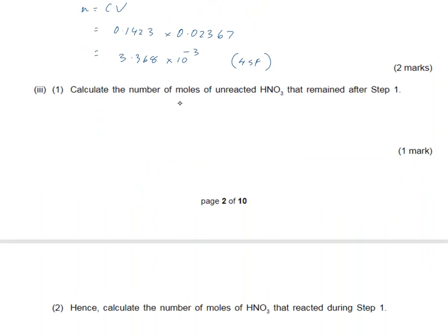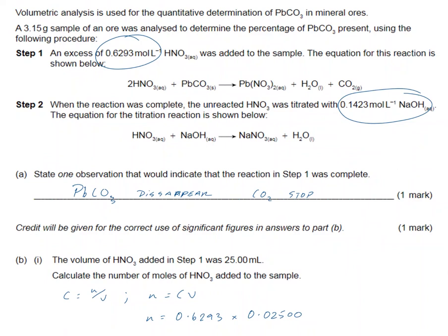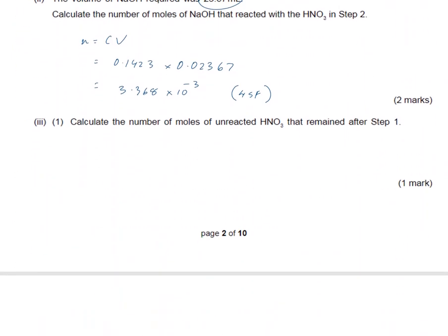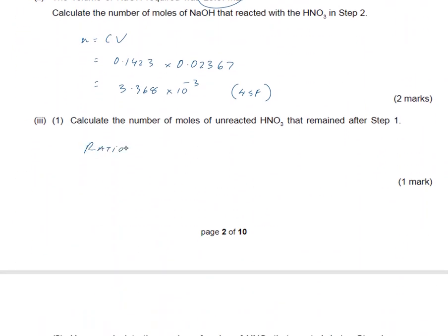In the next question it says calculate the number of moles of unreacted nitric acid that remained. The ratio of the nitric acid reacting with sodium hydroxide is one-to-one, so the moles of sodium hydroxide will equal the moles of nitric acid, which equals 3.368 times 10 to the power minus 3 moles.